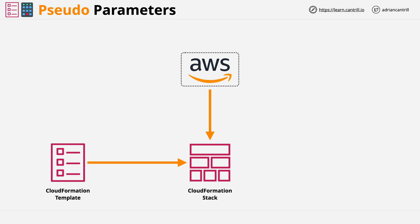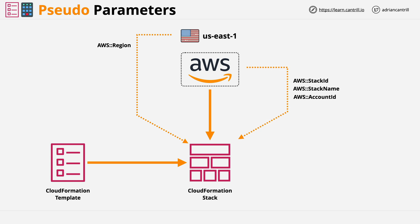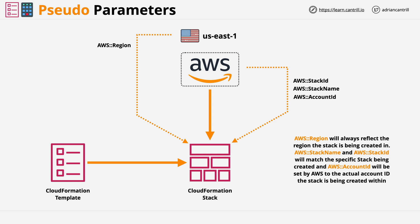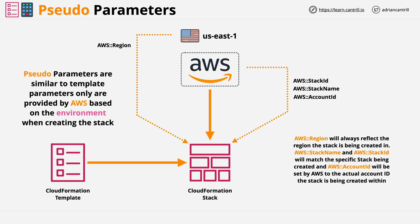An example of a pseudo parameter is AWS::Region, and the value always matches whichever region a template is being applied in to create a stack — in this example, us-east-1. Other pseudo parameters include AWS::StackId, which matches the unique ID of the stack; AWS::StackName, which matches the name of the stack; and AWS::AccountId, which is populated with the account ID of the account the stack is being created in. So pseudo parameters are like template parameters, but instead of being populated by a human or process, they're populated by AWS.